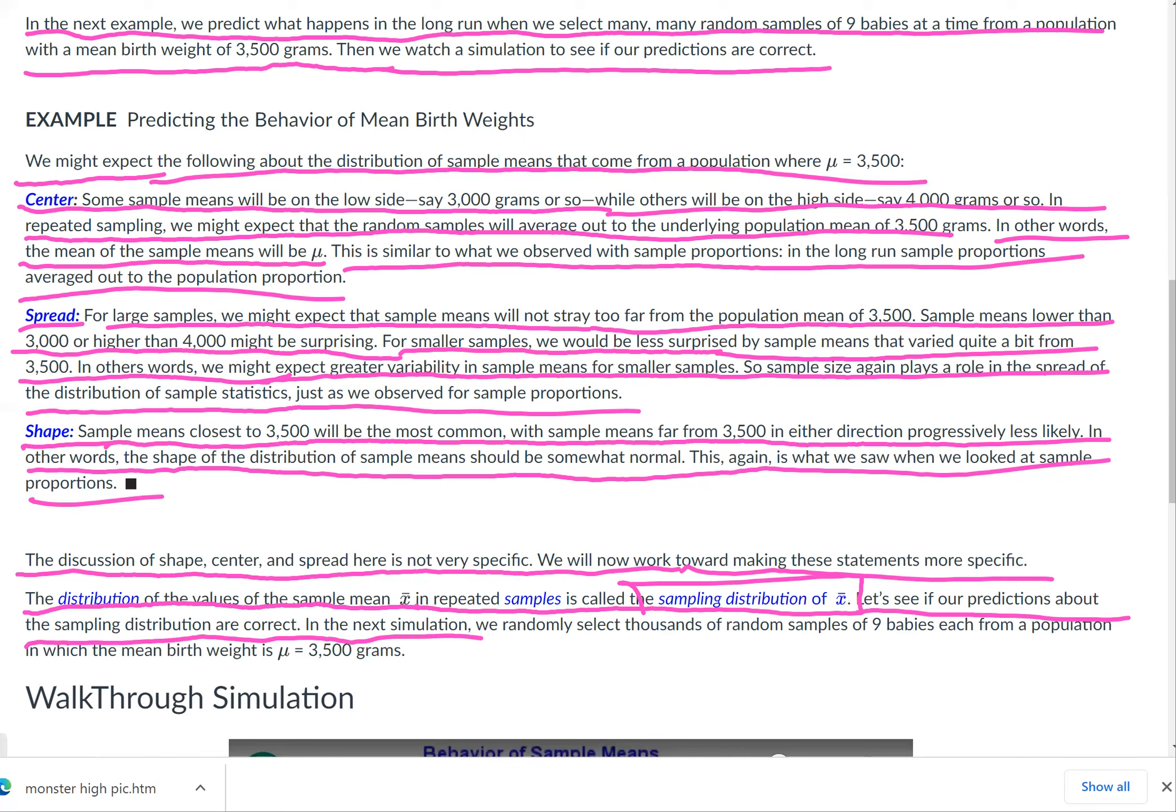In the next simulation in the video below, we randomly select thousands of random samples of nine babies each from a population in which the mean birth weight is 3,500 grams.